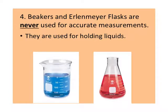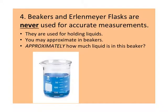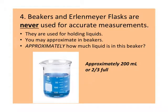Rule number four: beakers and Erlenmeyer flasks are never used for accurate measurements — they are used for holding liquids. You may, however, approximate a volume in a beaker or an Erlenmeyer flask. So if you're allowed to approximate, approximately how much liquid would you say is in this beaker? If you said approximately 200 milliliters or two-thirds full, you'd be correct.